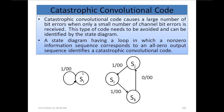These are two examples of catastrophic convolutional code. When the information bit is 0, the sequence corresponds to an all-zero output sequence, as can be seen — this is all-zero output. If this kind of output is generated for input bit 0, this is called catastrophic convolutional code.